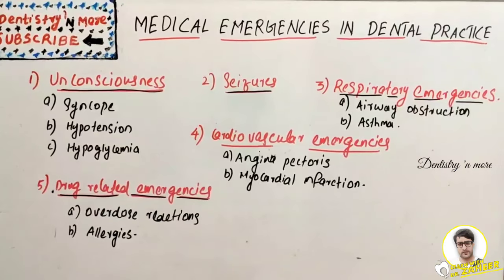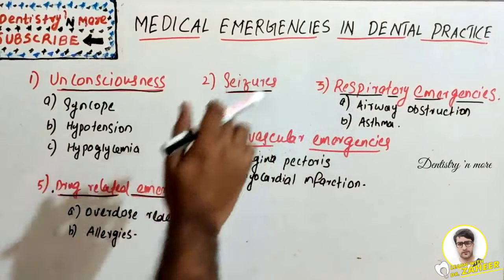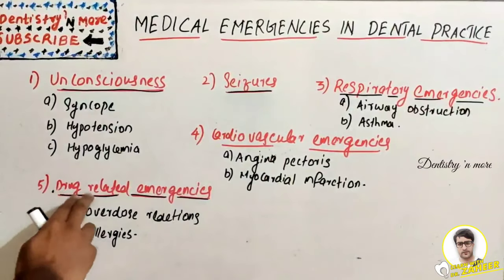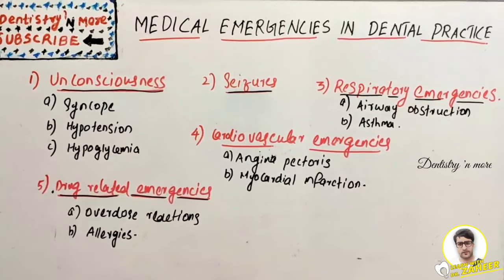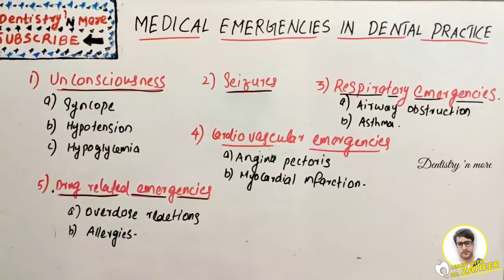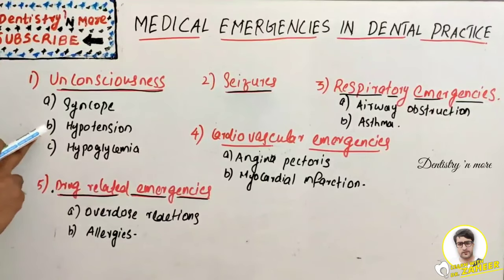We have classifications broadly into conditions such as unconsciousness, seizures, respiratory emergencies, cardiovascular emergencies, and drug-related emergencies. An emergency is nothing but a serious and unexpected situation which requires immediate action - an unforeseen combination of circumstances that calls for immediate action. We'll start with unconsciousness, which includes syncope, hypotension, and hypoglycemia.